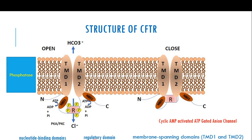The CFTR protein is also known as the cyclic AMP activated, ATP-gated, anion channel. These are two different names for the same thing. Regarding the single polypeptide structure: starting from the N-terminal domain, the protein spans the membrane — transmembrane domain one — then you have nucleotide binding domain one, then the regulatory domain, then transmembrane domain two, then NBD2, and then the carboxy terminal. So we are talking about a single polypeptide with five different kinds of domains.